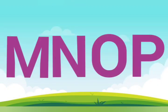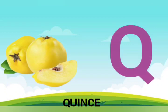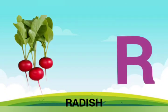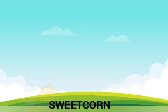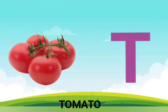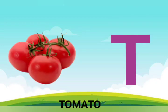Q is for quince, quince. R is for radish, radish. S is for sweet corn, sweet corn. T is for tomato, tomato.